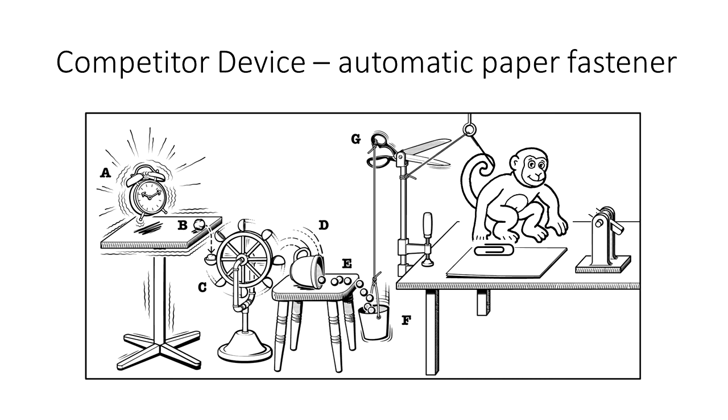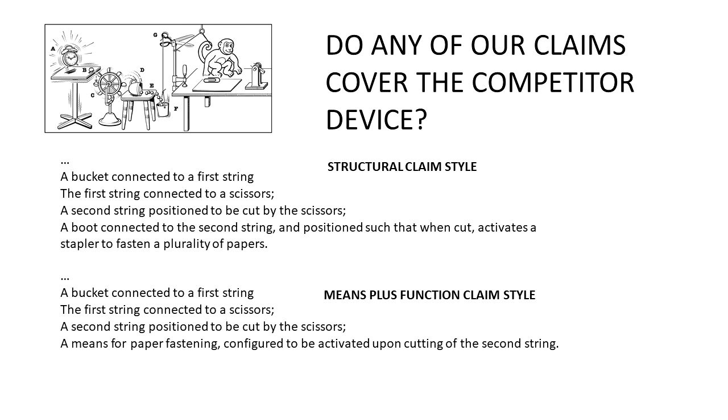Now this monkey has a paper clip, and when the scissors cuts the string, the monkey feels his tail droop down, and he is trained to fasten the papers in response to that. So do any of our claims cover the competitor device? Well, clearly the structural claims won't cover this device because the competitor does not use a shoe or a stapler.